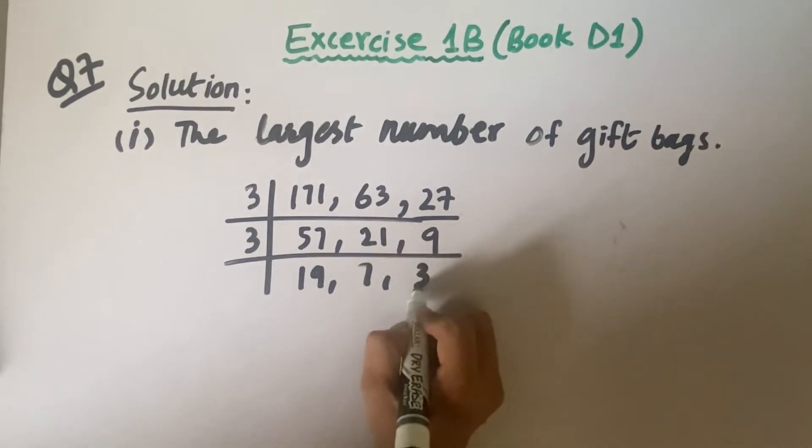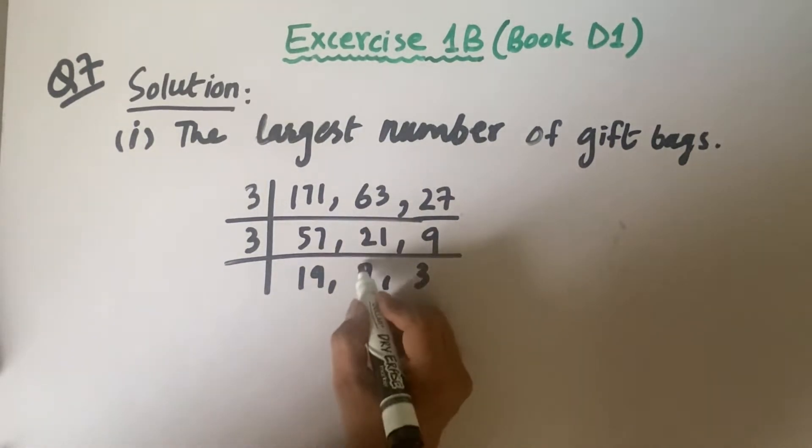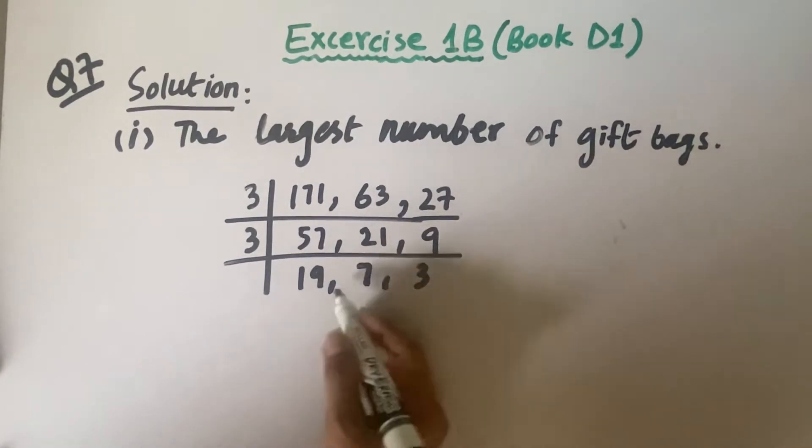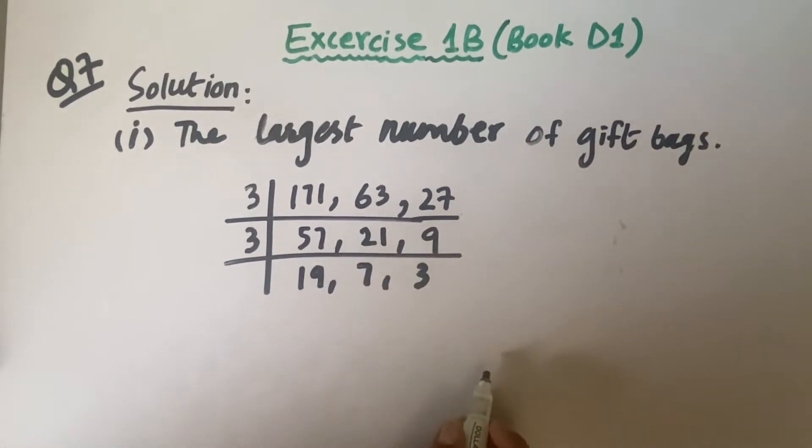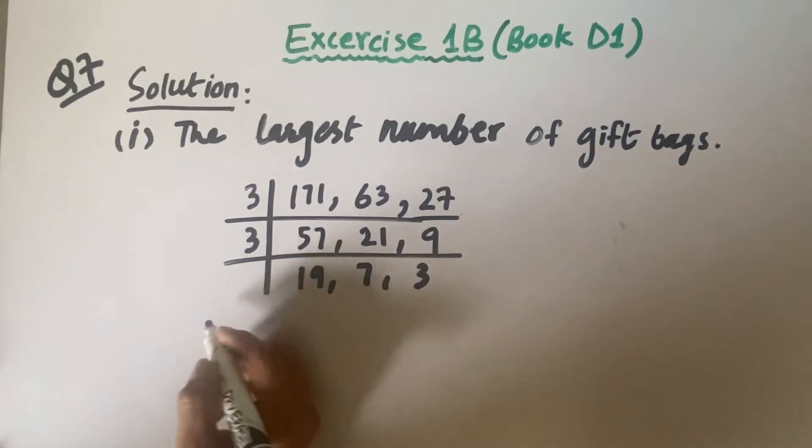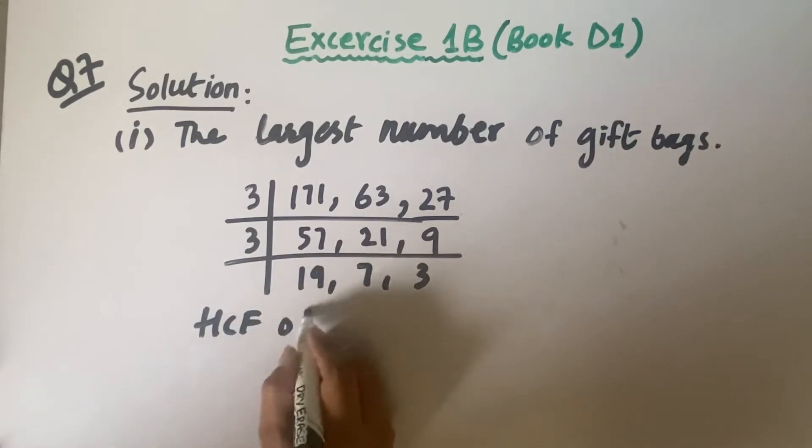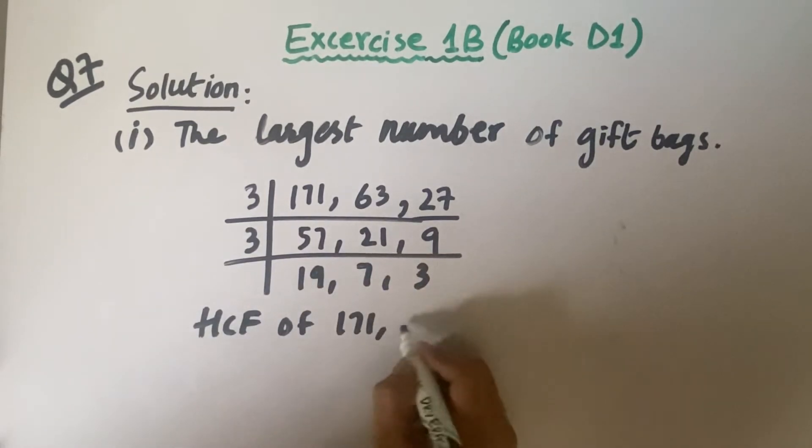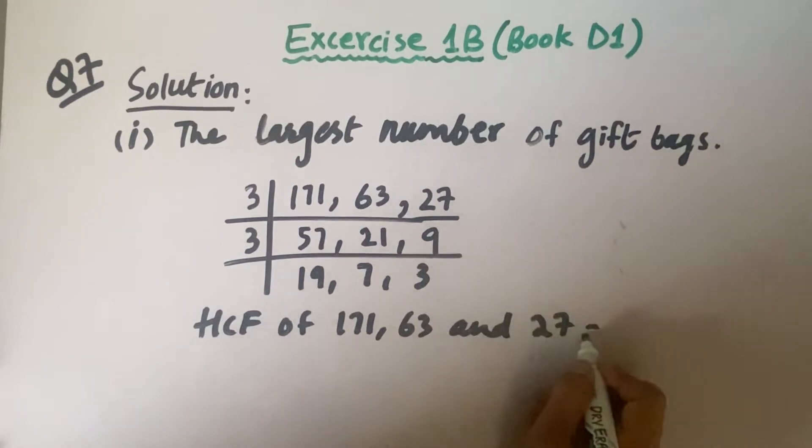Here I am going to stop because 19, 7, and 3 are prime numbers, so they can't be reduced by the same prime number. Here I will take out the HCF of 171, 63, and 27 by multiplying the used prime numbers: 3 times 3 equals 9.